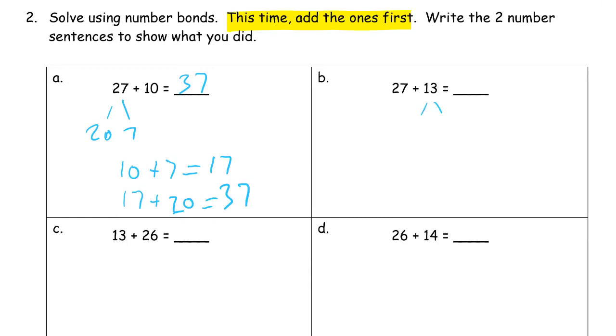Here we go. 10 and 3. So 27 plus... I'm going to add the 1s first. 3 is 30. And then 30 plus 10, 40.